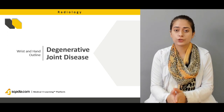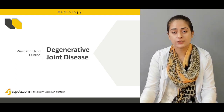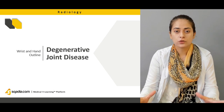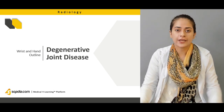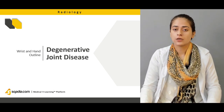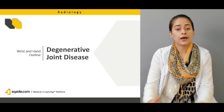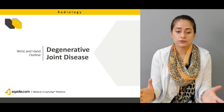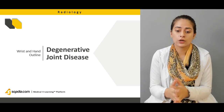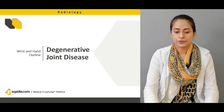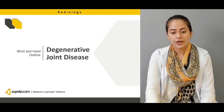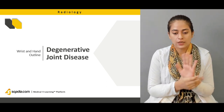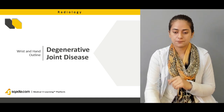Then we're going to talk about degenerative joint disease, which is a classical chronic disease of any joint anywhere in the body. We'll discuss how DJD — also called osteoarthritis — appears on radiographs when it affects the wrist.